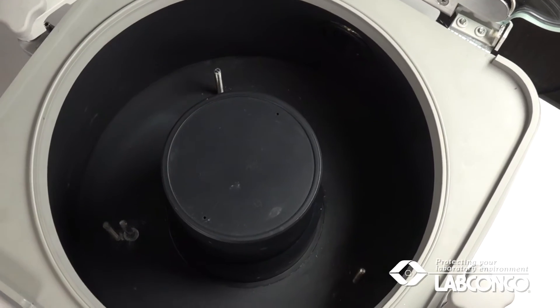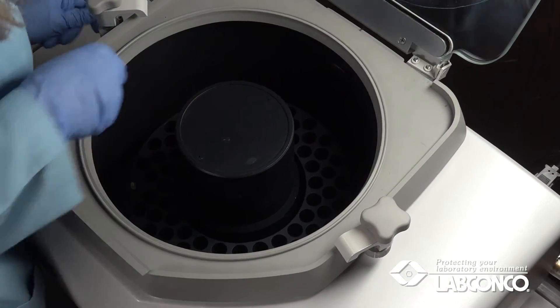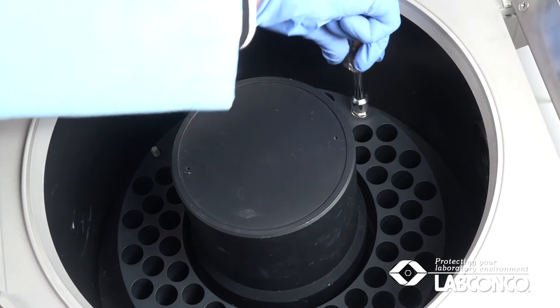Position the block over the three studs in the chamber. Install the flat washers and hex nuts. Tighten securely.